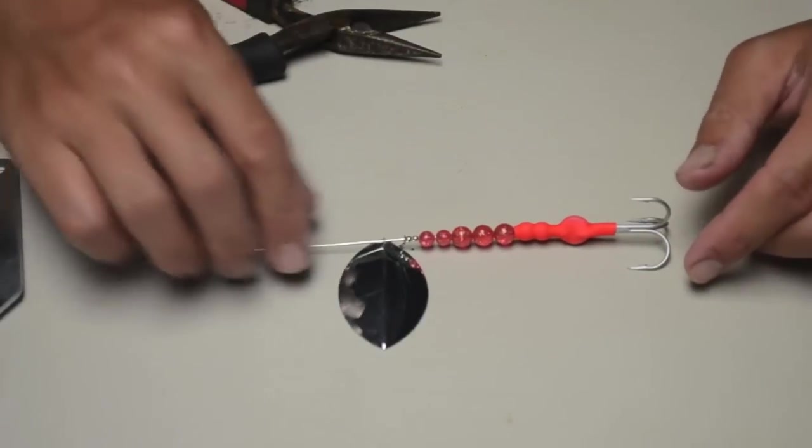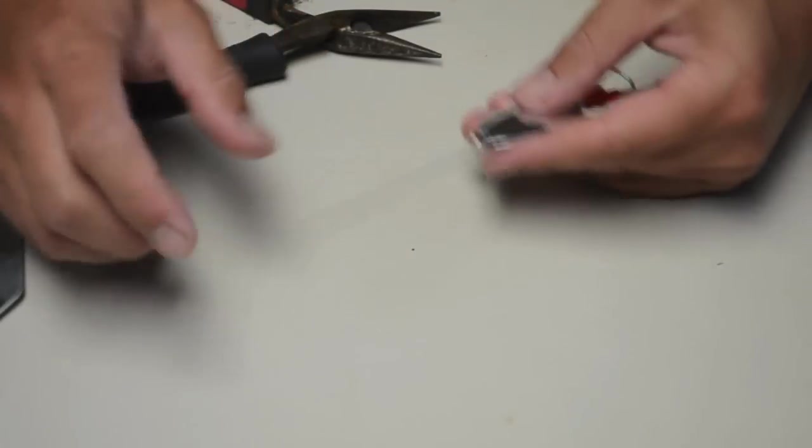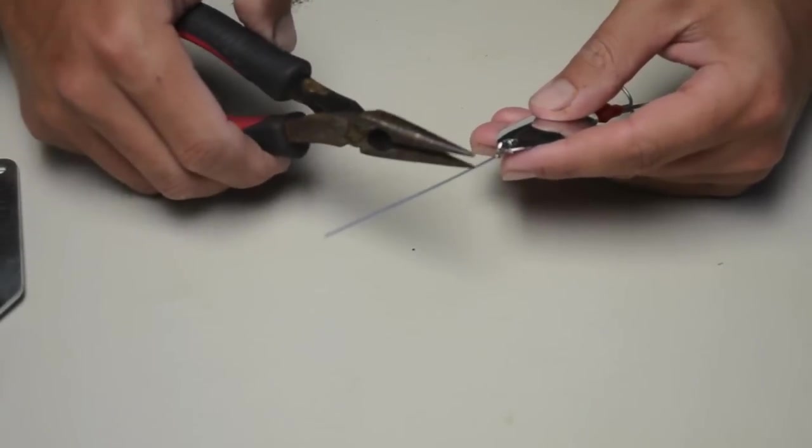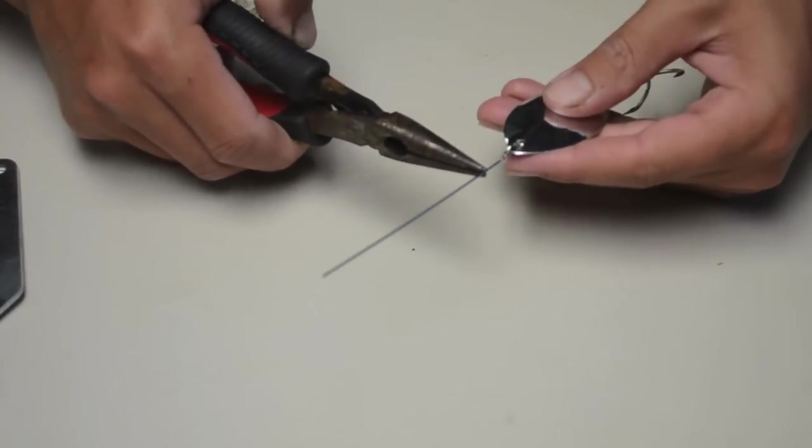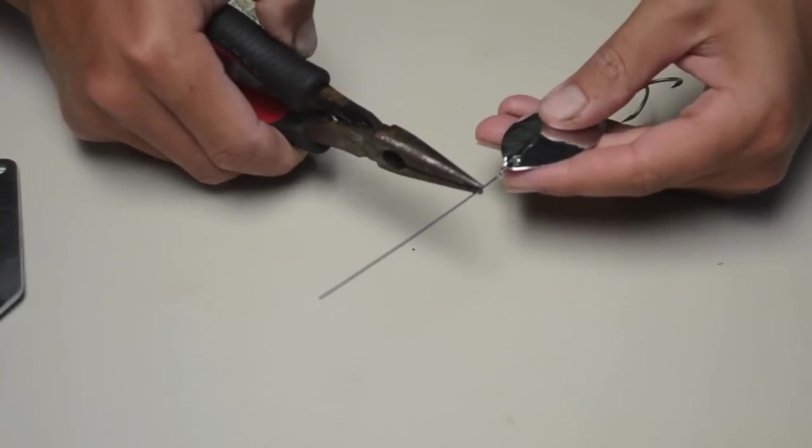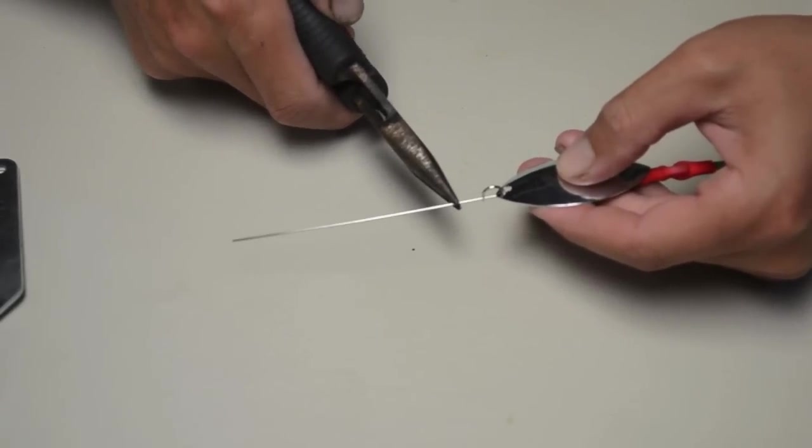So the last bit is just to form the wire loop that will be the terminal where you attach it to the line. So I usually go up about a quarter inch above the blade and the clevis pull all the way down.